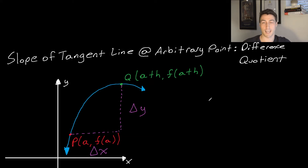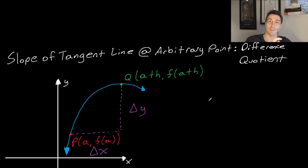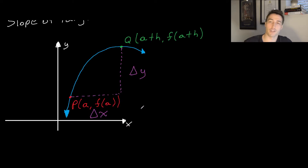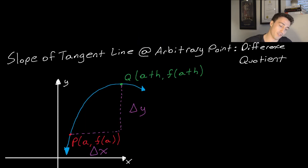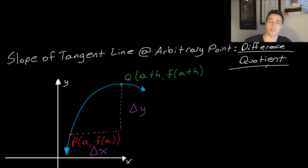Now we can express the tangent line more algebraically. We understand the definition of slope — rise over run. Looking at points P and Q, there's a delta-y and a delta-x. Using an arbitrary point, this leads to the slope of the tangent line at an arbitrary point, which results in the difference quotient. This is the first principles definition of a derivative — this is where calculus is shown.